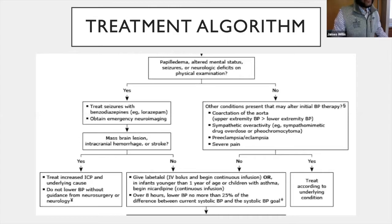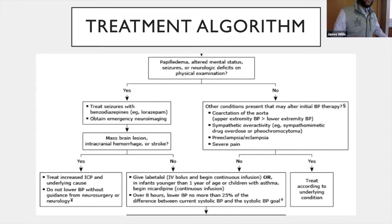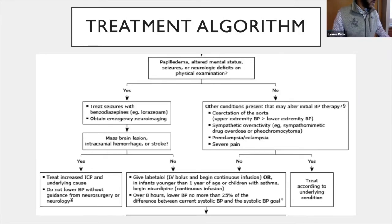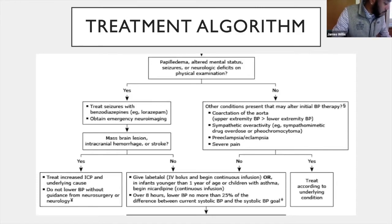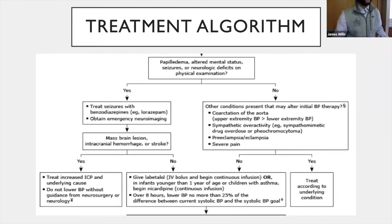If you see papilledema, altered mental status, seizures, or neurologic deficits, treat seizures with a benzodiazepine like lorazepam and obtain imaging. If there is a brain mass, hemorrhage, or stroke, do not lower blood pressure without guidance from neurosurgery or neurology — treat the increased ICP and underlying cause. Otherwise, consider other treatable causes of elevated blood pressure: coarctation of the aorta, severe pain, preeclampsia, cocaine or amphetamine use, jellyfish or scorpion stings, pheochromocytoma, or intracranial hypertension. Treat the underlying cause if identified.